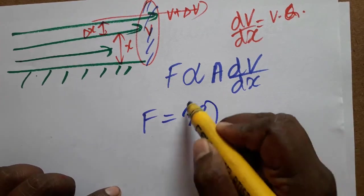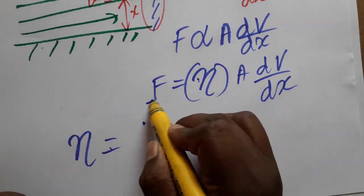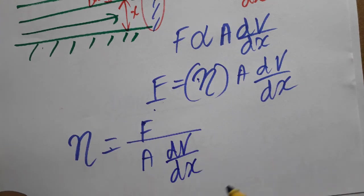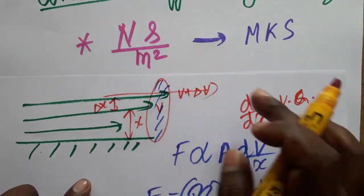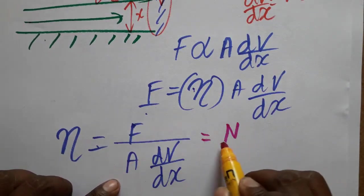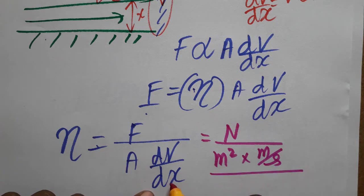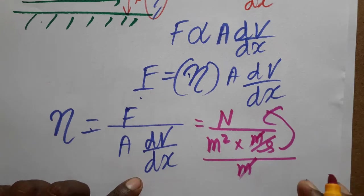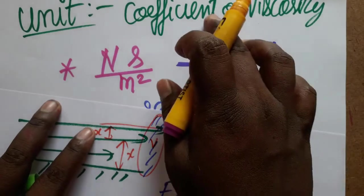The viscous force is directly proportional to the area of the pipe and the velocity gradient. So F equals η times A times dv/dx, where η is the coefficient of viscosity. Rearranging: η equals force divided by area times dv/dx. The unit of force is Newton, area is meter square, velocity is meter per second divided by meter (dx), so meters cancel. Second goes to the numerator, giving us Newton·second per meter square — the first unit in the MKS system.